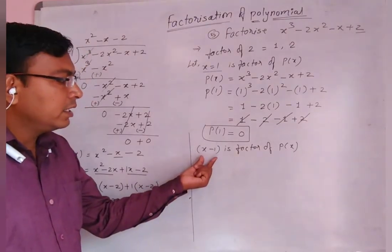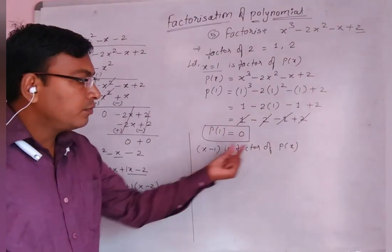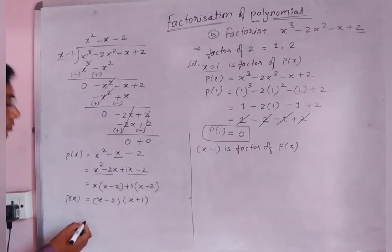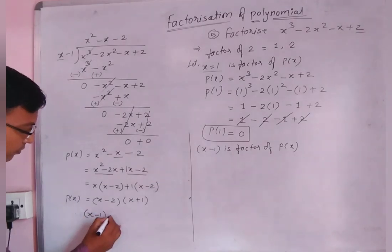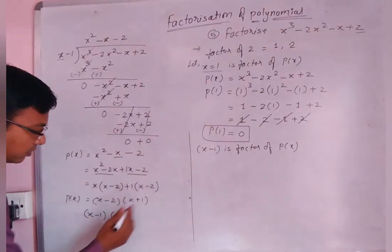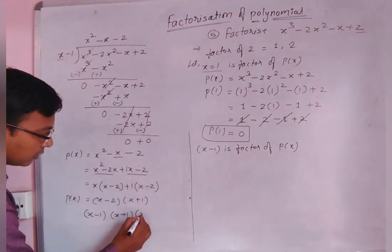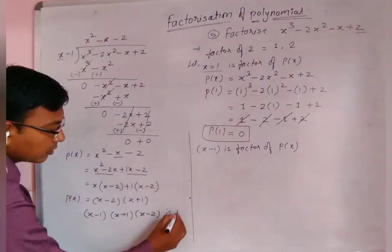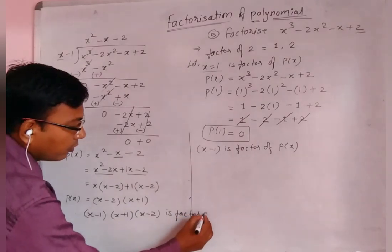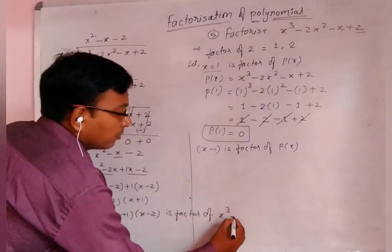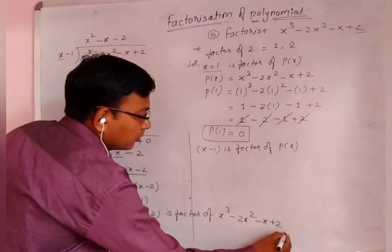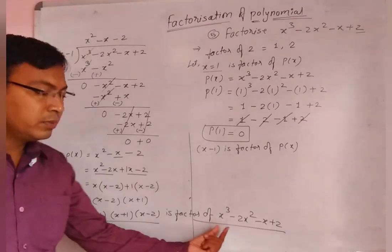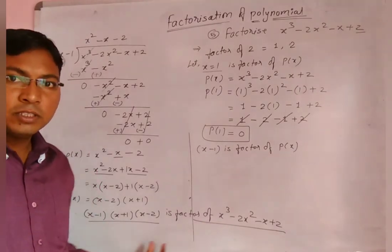We have already found that x minus 1 is a factor of p of x. Therefore, x cubed minus 2x squared minus x plus 2 equals x minus 1 times x plus 1 times x minus 2. These three are the factors of this polynomial. This is how you solve and find the factors of a polynomial.